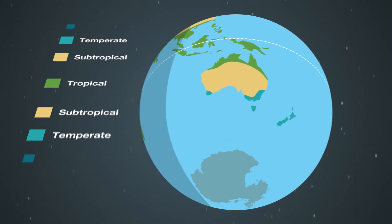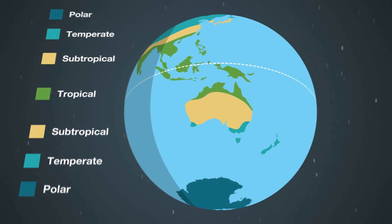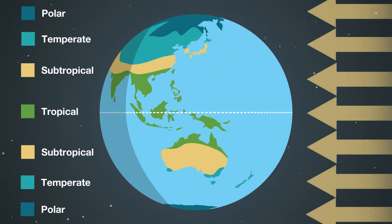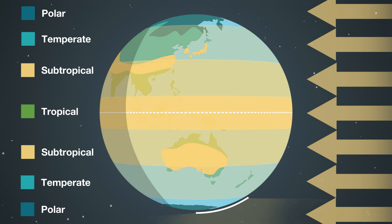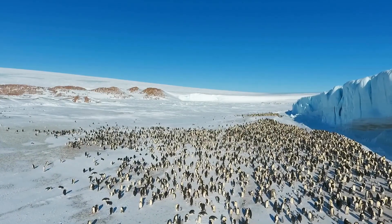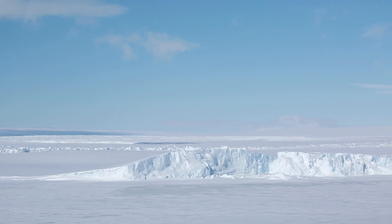The coldest climate zone is the polar zone. Here the sun is lowest in the sky and its rays and energy reach the earth at an even larger angle. The polar zone is very cold, and cold air can't hold a lot of moisture. Some areas in the Arctic and the Antarctic are as dry as our subtropical deserts.